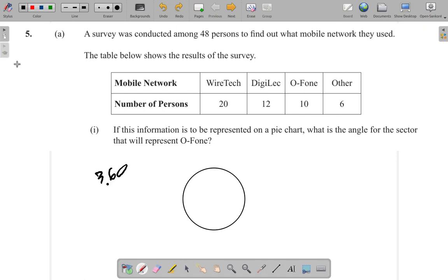Suppose it was 24 persons. That is half of the 48. Then you would have halfway. So half of the angle would be half of 360, 180 degrees.